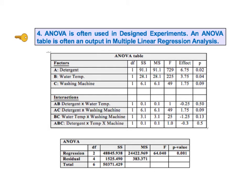Key to understanding number four says ANOVA is often used in designed experiments, and an ANOVA table is often an output in multiple linear regression. Design of experiments and multiple linear regression are fairly complicated concepts and won't be explained here. The book has several articles on each, and there will be several videos. Suffice it to say, an ANOVA table is used by both in studying the effects of the individual factors.